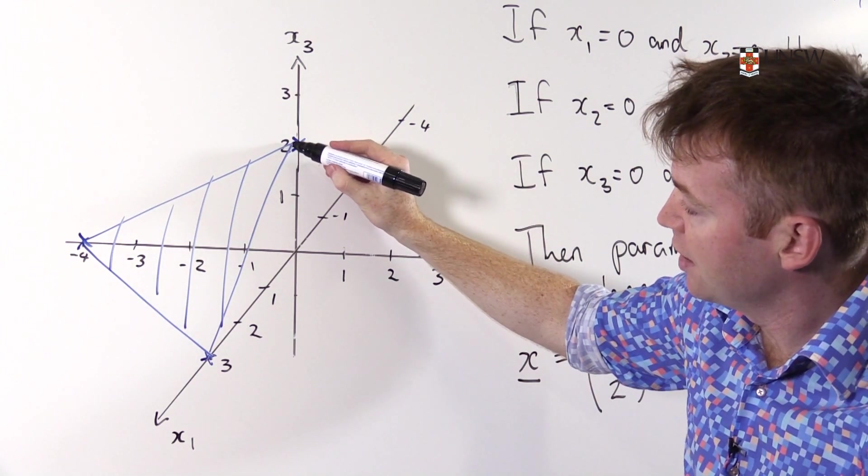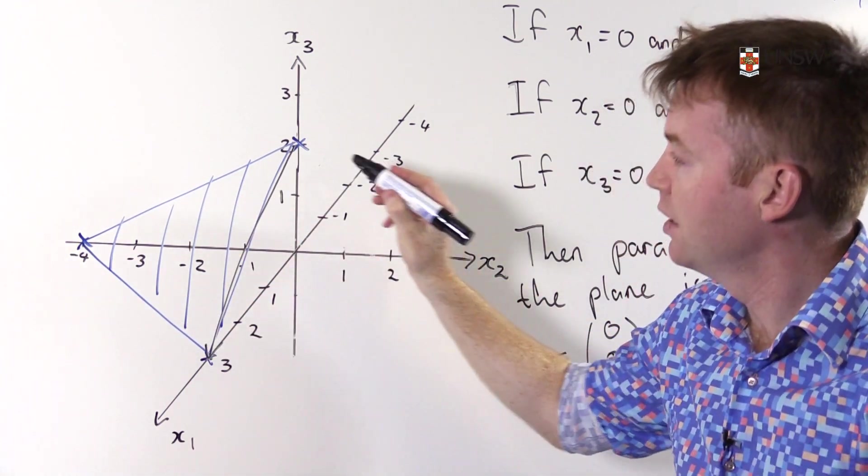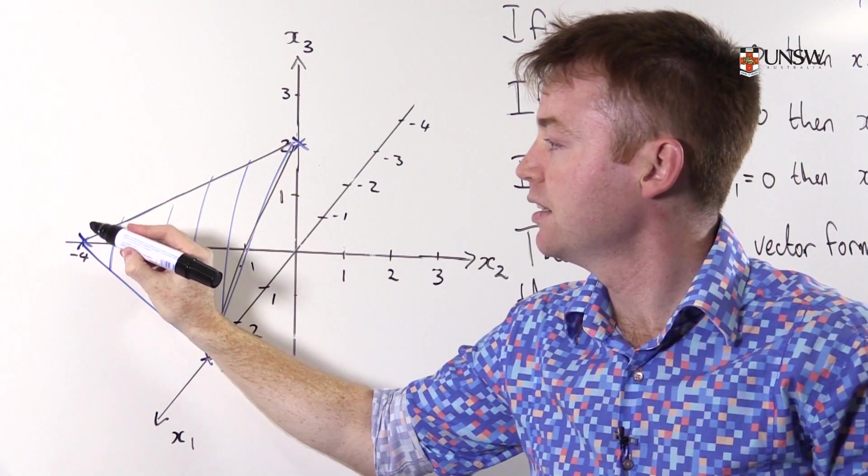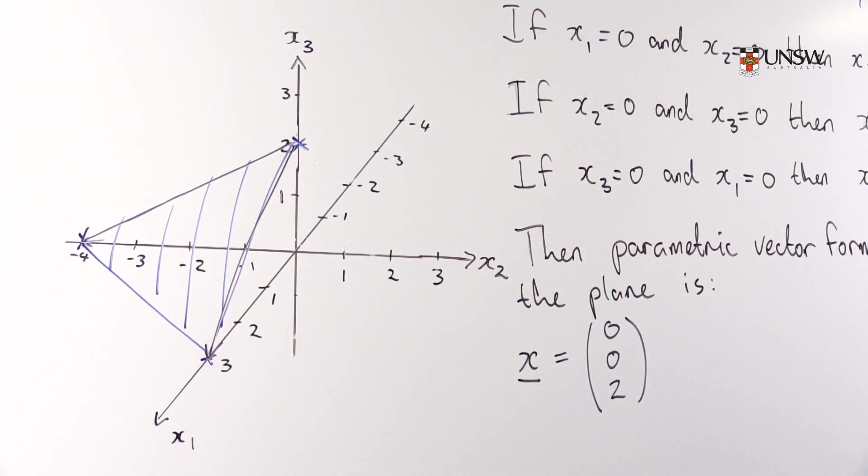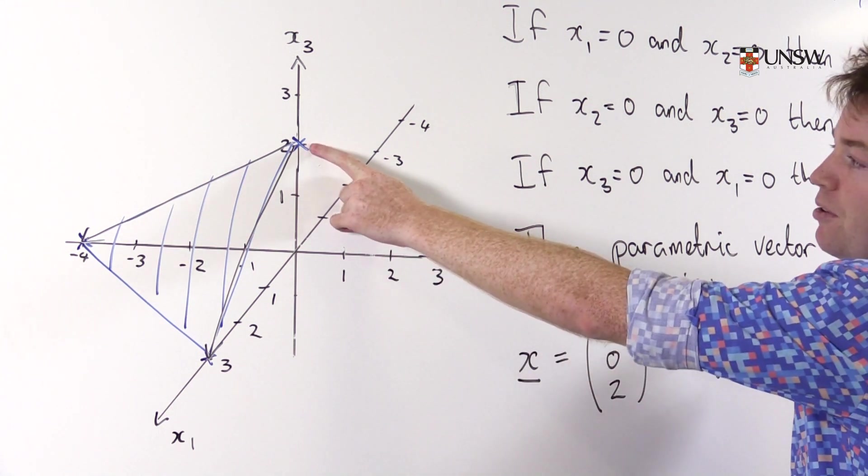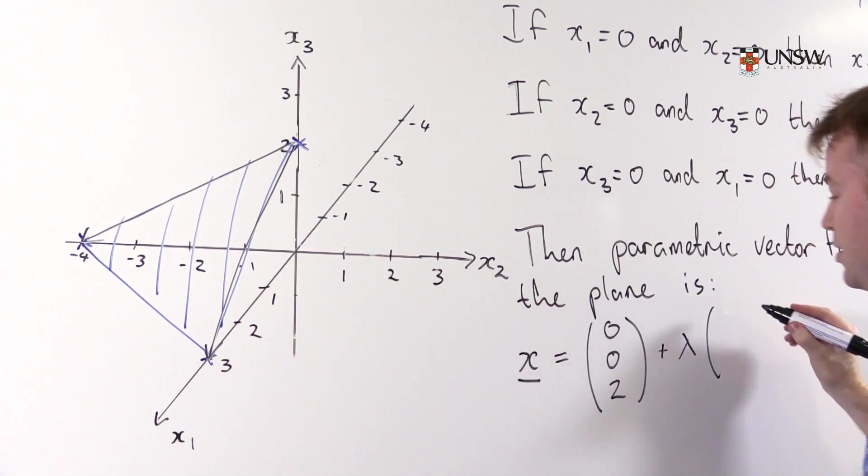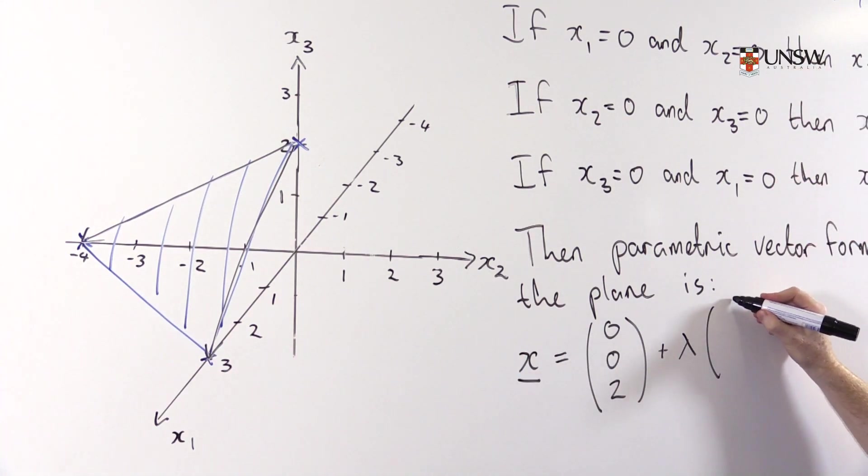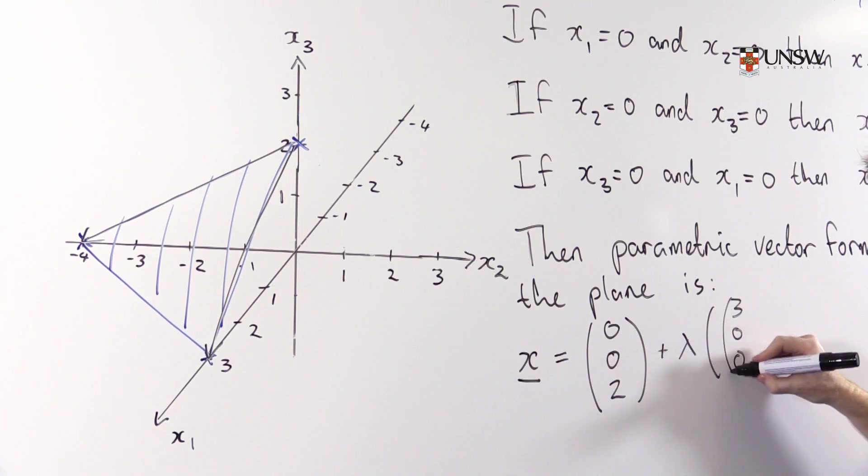The vectors we'll choose are this vector here and this vector here. So it's λ times, let's see. Now it's from this vector go to this vector. So that will be (3, 0, 0) minus (0, 0, 2).